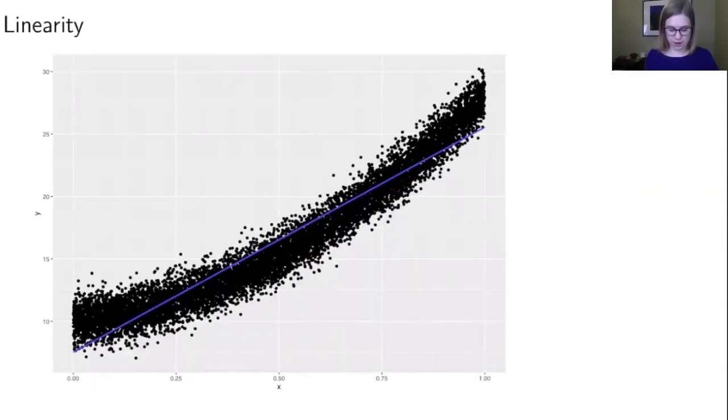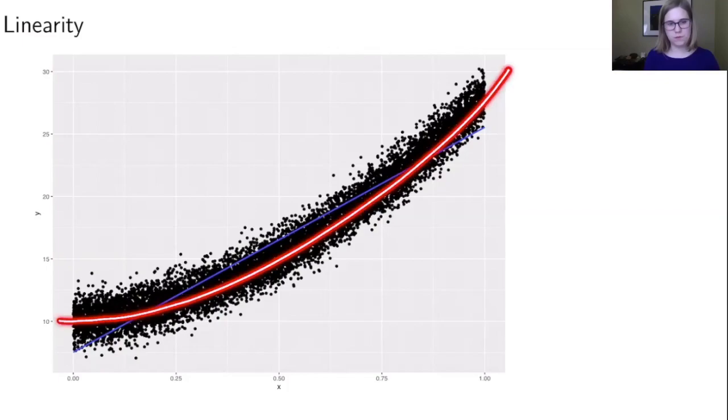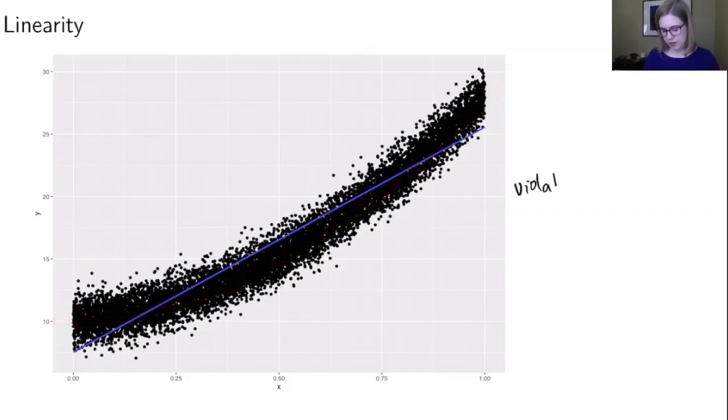So the first one is linearity. If you're going to use a linear model, the data needs to look linear. So in this case, I have this straight blue line, which would be the line of best fit if we use linear regression. But when I look at the data, it actually looks like something curved would fit better. And so this is a violation of the linearity condition. So when you are going to do inference, you need to plot your data first to make sure that it looks linear.